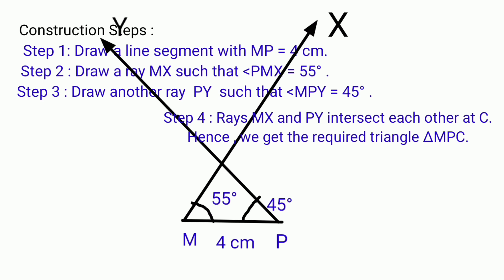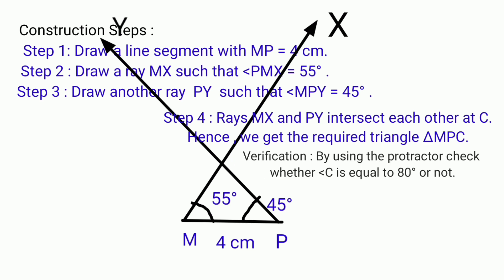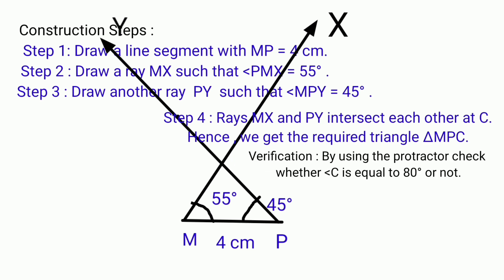Step 4: Rays MX and PY intersect each other at C. Hence we get the required triangle MPC. Verification: By using the protractor, check whether angle C is equal to 80 degrees or not.